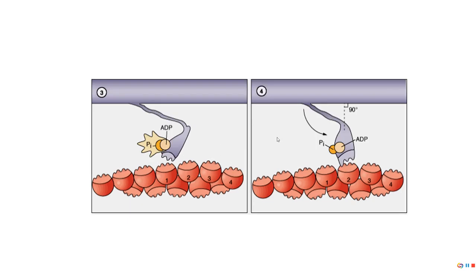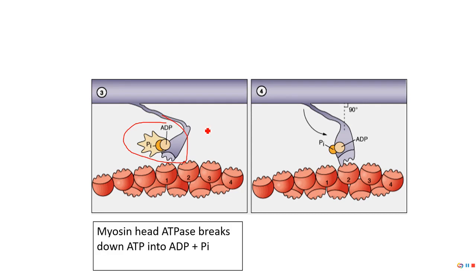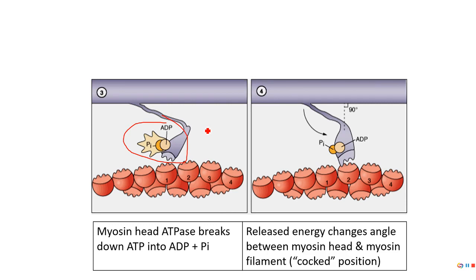Next, the ATP breaks down into ADP, phosphate, and energy. That release of energy causes the myosin head to cock — notice the angle changes significantly. When it becomes cocked, myosin reattaches to actin, but this isn't a tight bind — it's just loosely hanging on. The energy released from ATP breakdown cocks the myosin head.